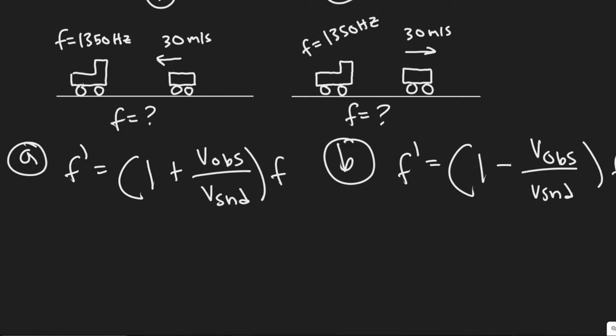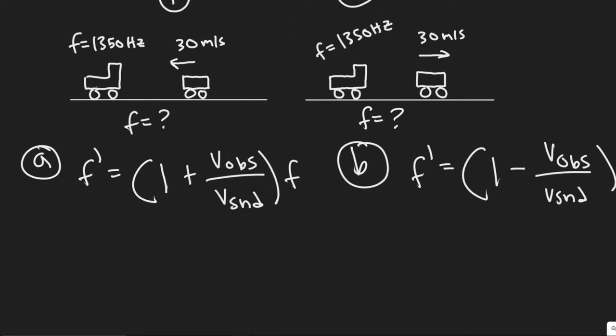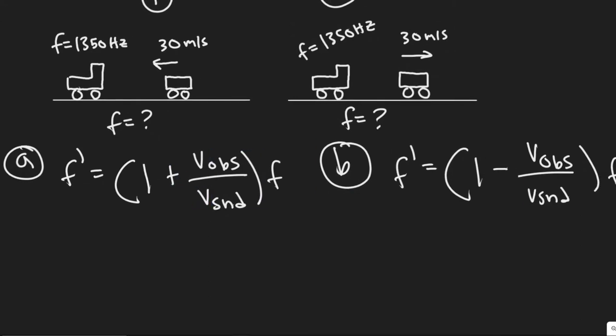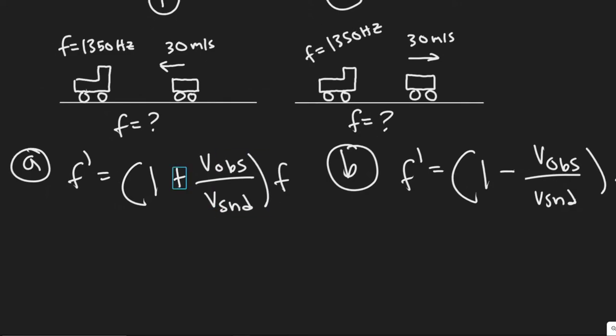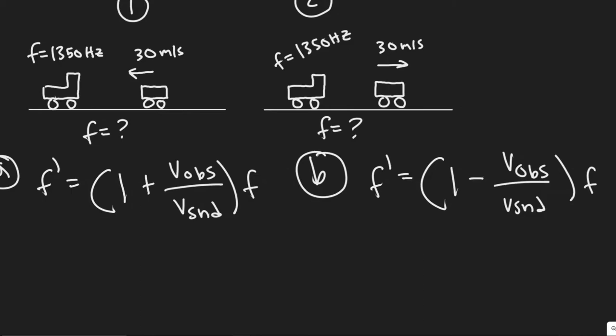So notice if you're going away, you have a negative there. If you have a positive, you're going towards it. So that's an important distinction to make. It's pretty easy to memorize because if you're going towards it, we know that the frequency is going to increase. If you go away from it, it's going to decrease.